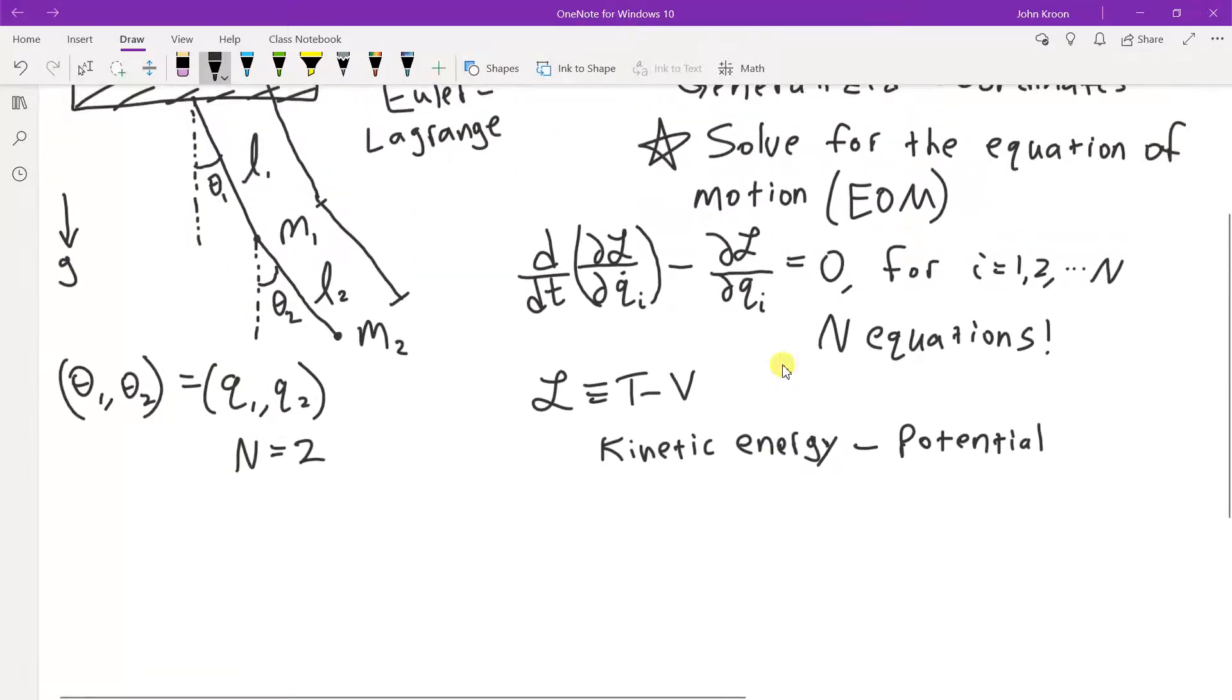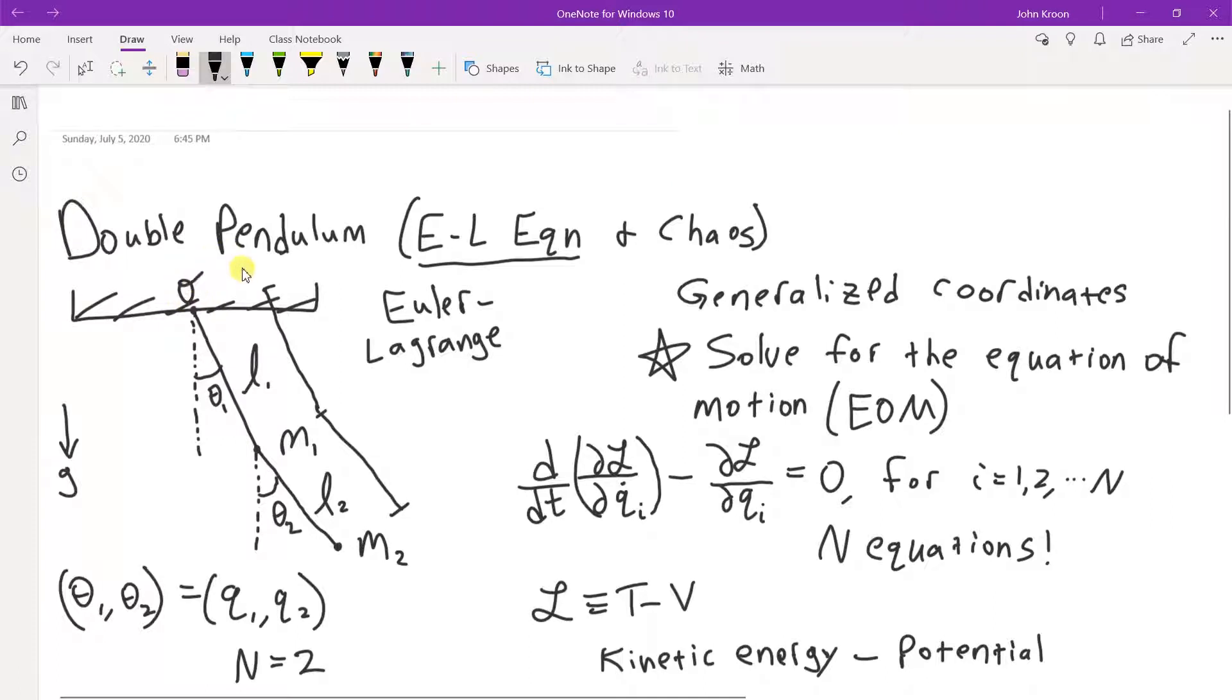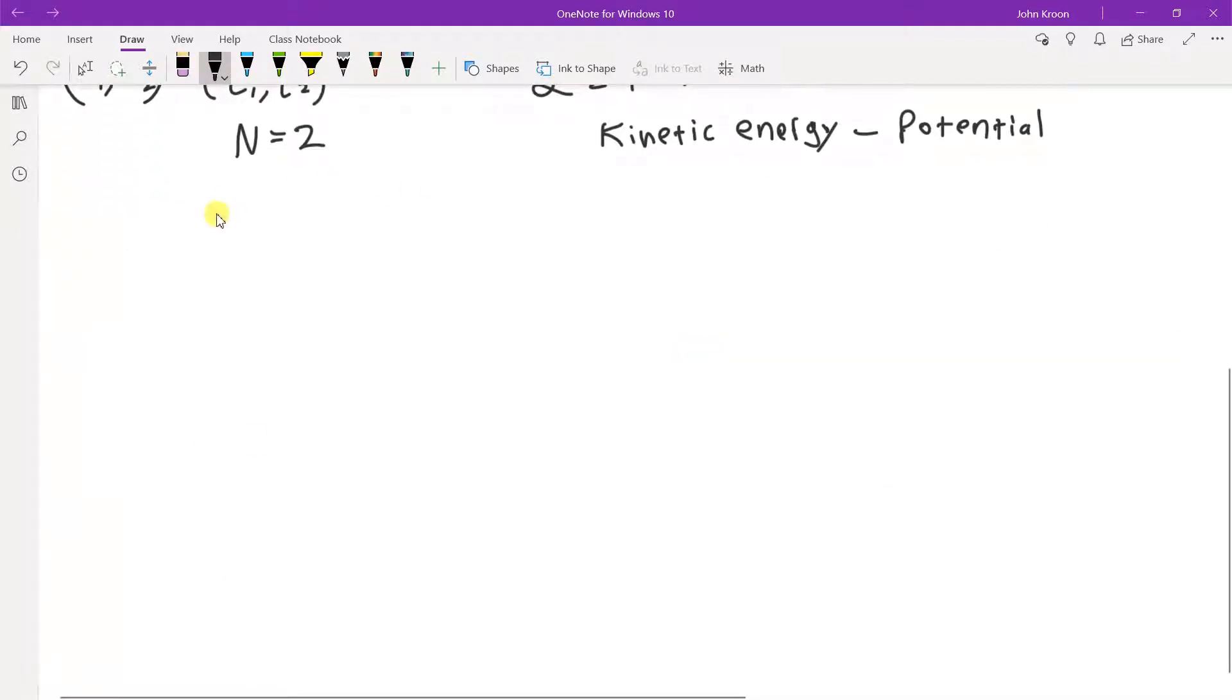So the first thing you want to do is remember your basic trig designations. If we put the origin right here at the pivot point of the main hinge of the whole system, so we have the x coordinate of the first mass is l1 sin theta 1. And we have x or sorry y1 equals minus l1 cosine theta 1.